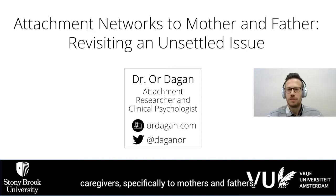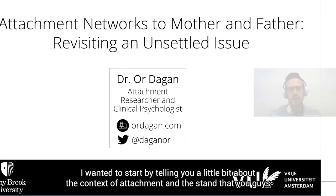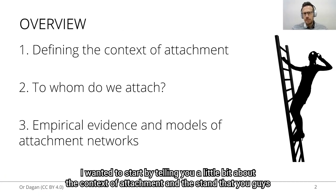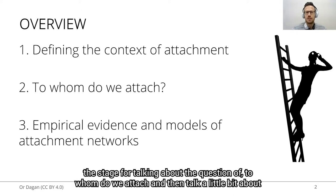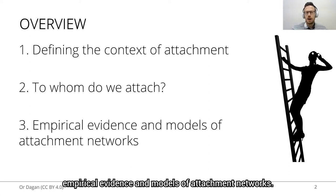In terms of assessing attachment networks to multiple caregivers, specifically to mothers and fathers. I wanted to start by telling you a little bit about the context of attachment. I understand that you guys already have delved into attachment and attachment classifications, but I think it would set up well the stage for talking about the question of to whom do we attach, and then talk a little bit about empirical evidence and models of attachment networks.